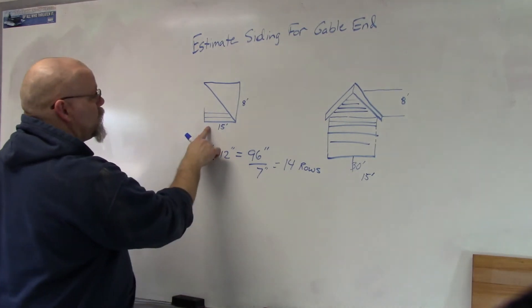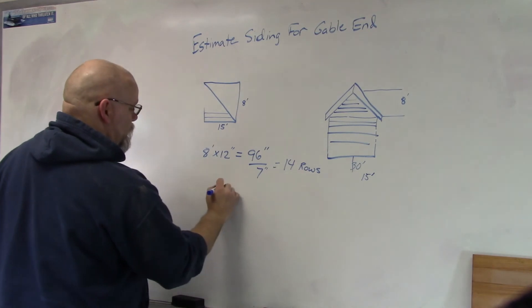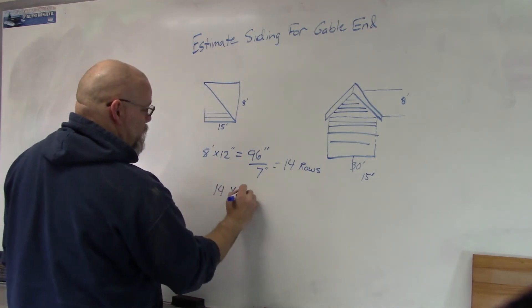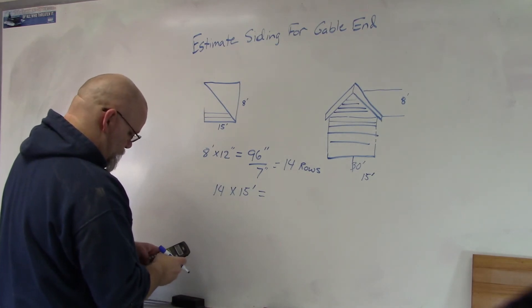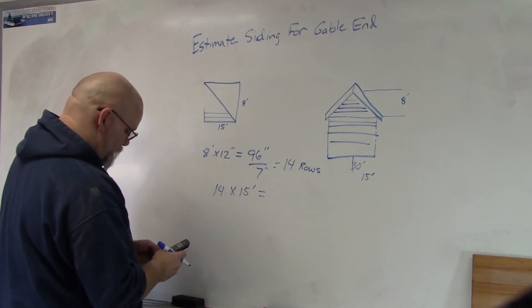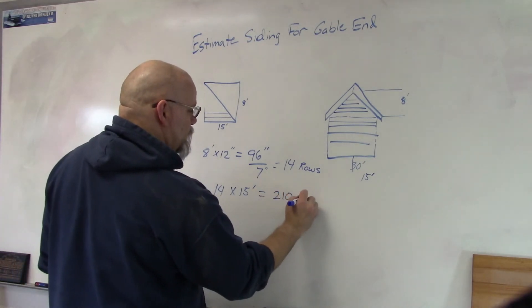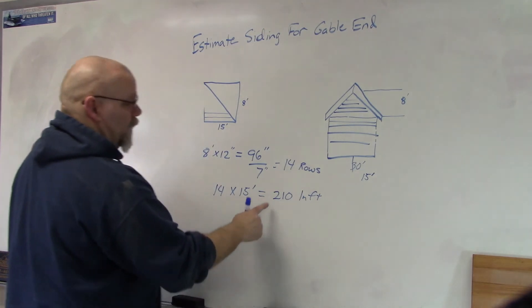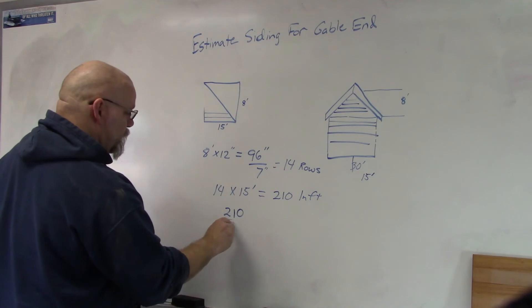So I need 14 rows, and each row is going to be 15 feet, so I take 14 rows times 15. 14 times 15 gives me 210 linear feet of siding that I need.